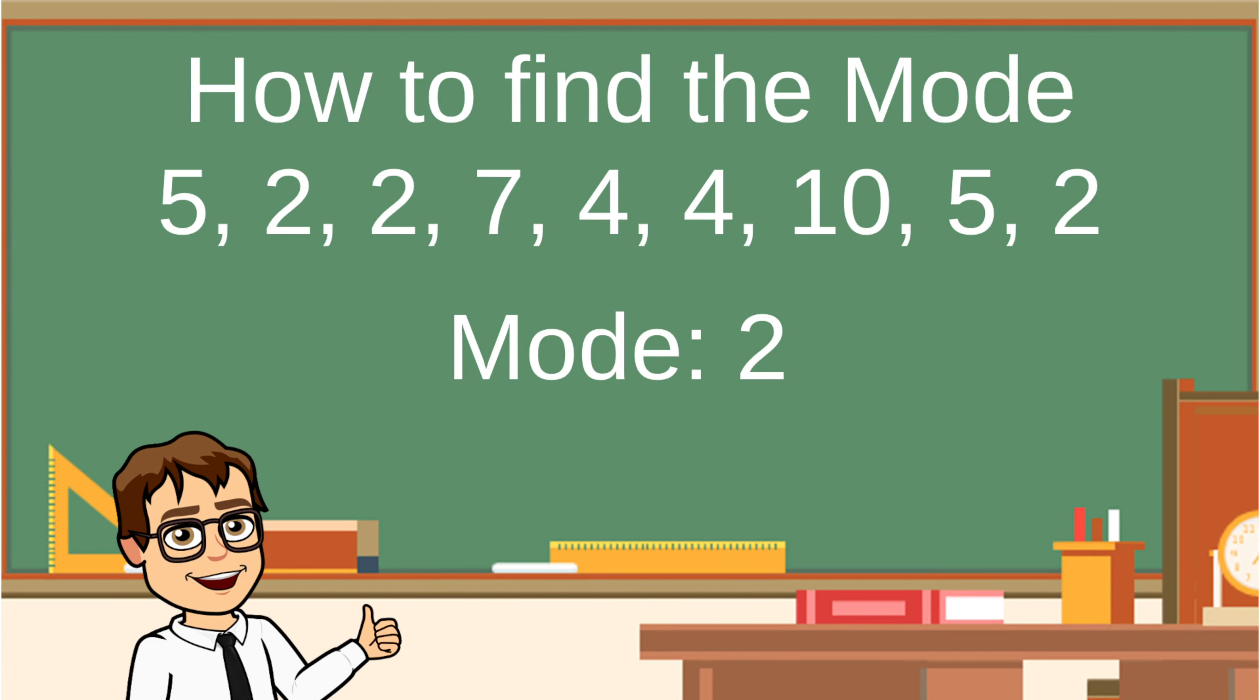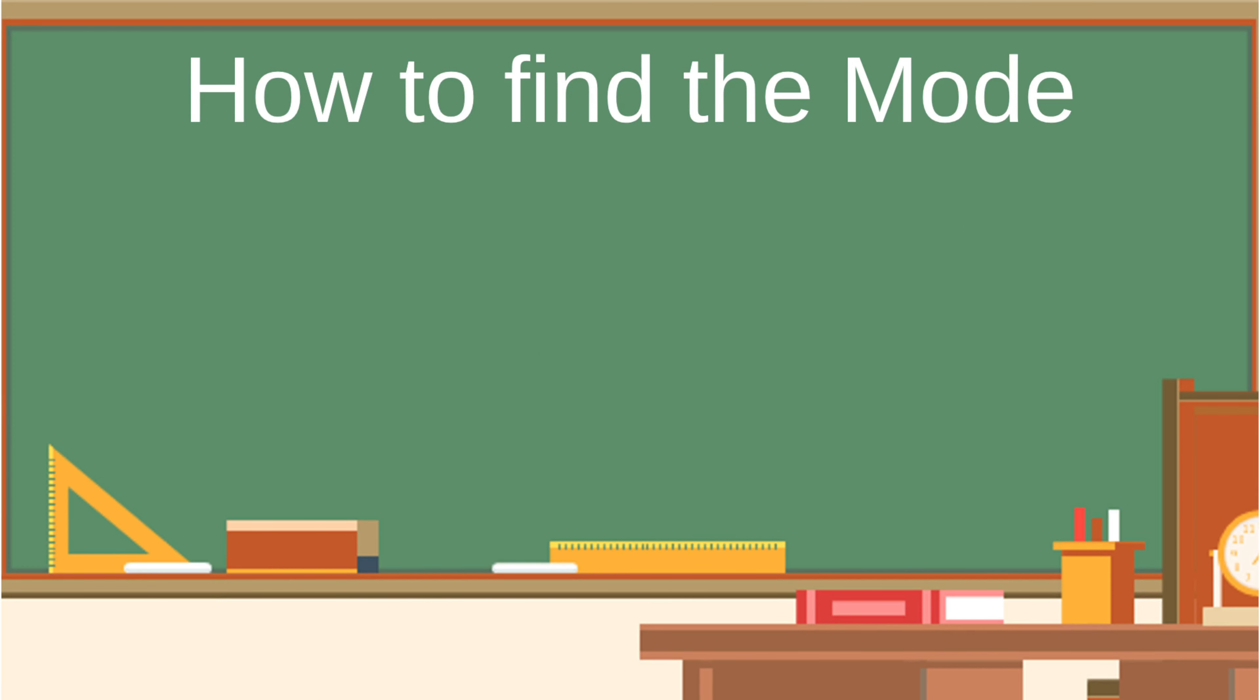Mode is pretty easy to figure out, isn't it? It's just counting. Let's try one more example. In this data set we have 2, 4, 6, 2, 3, 7, 1, 3. Only two and three seem to be repeating numbers in this set.